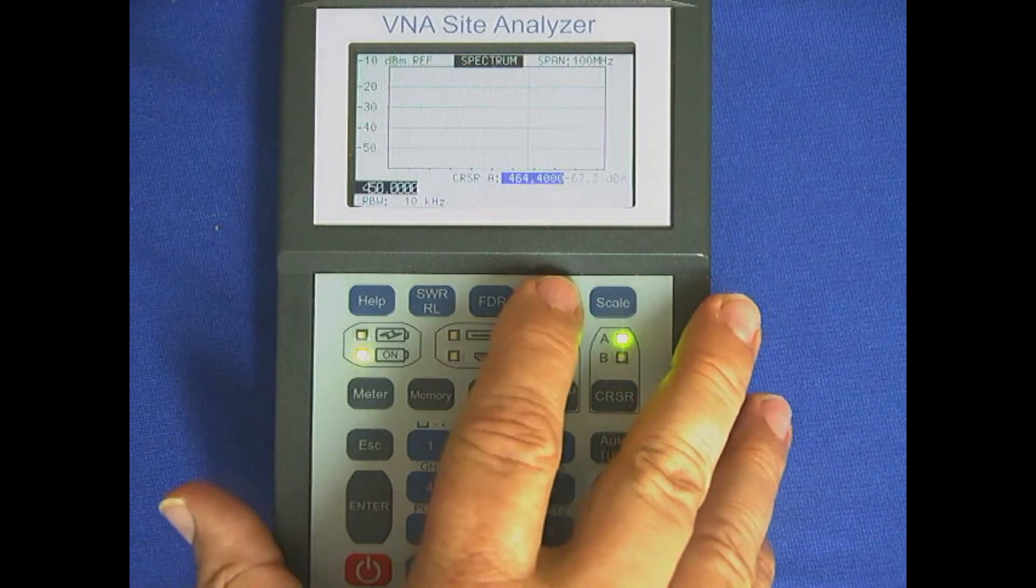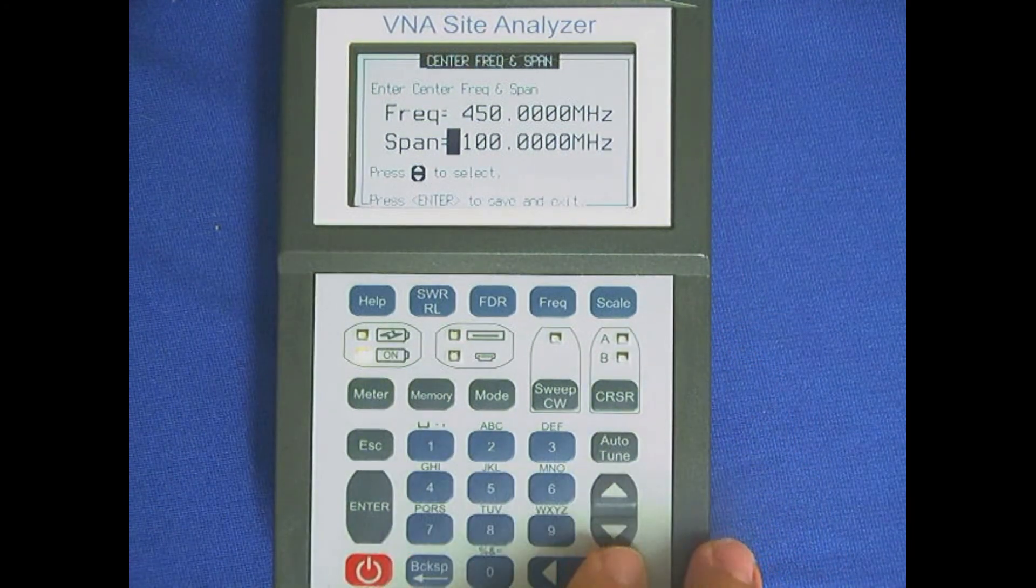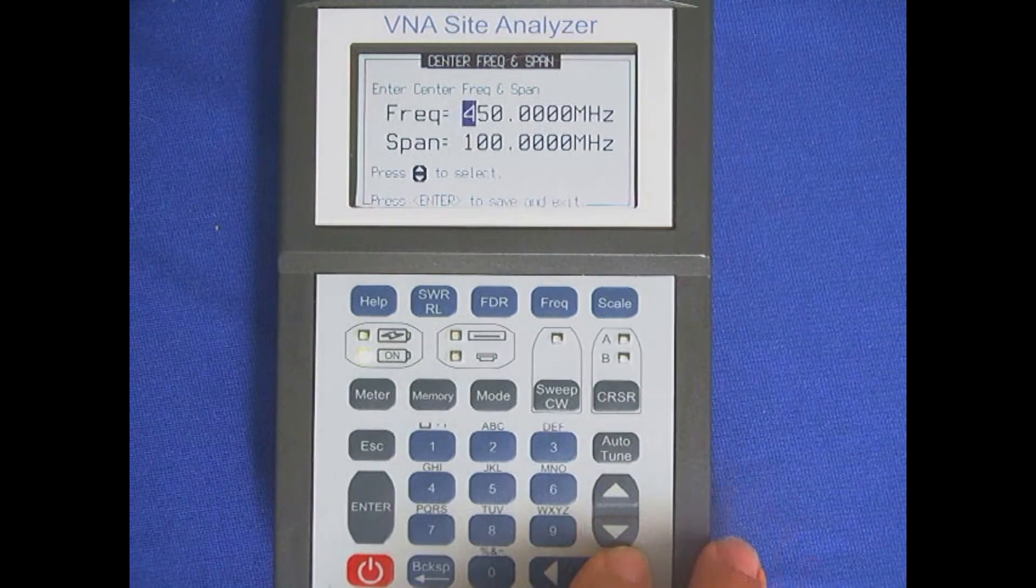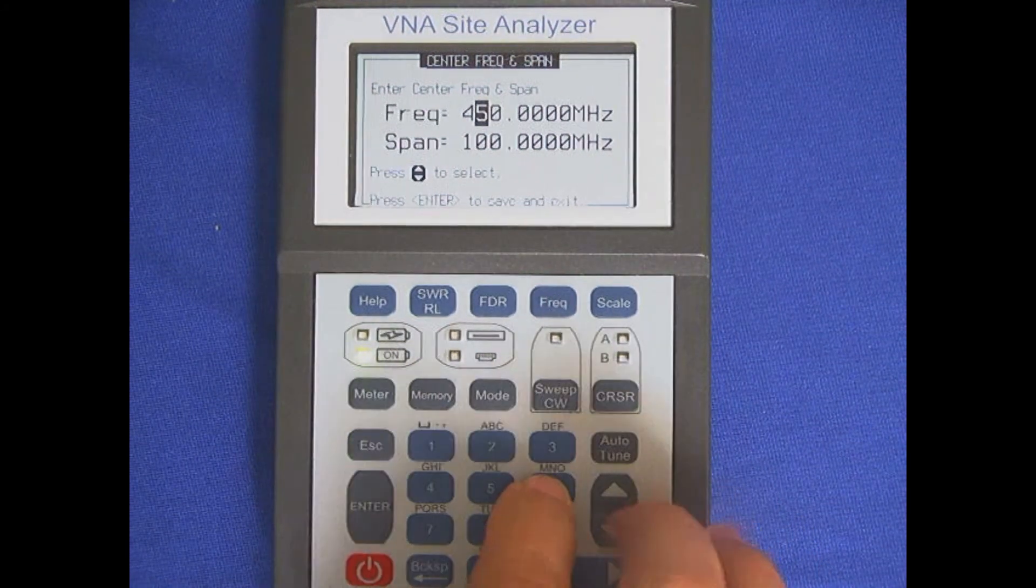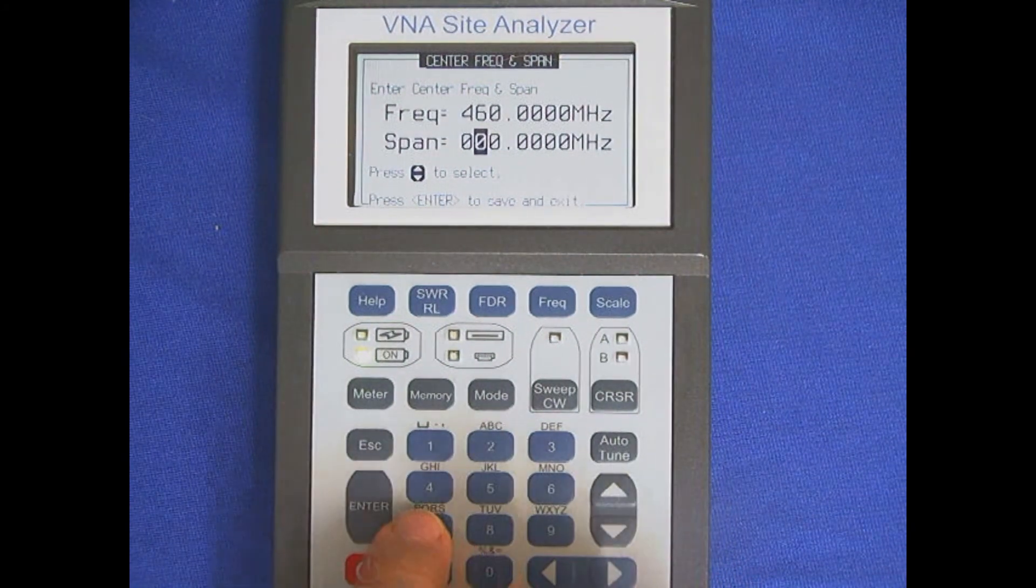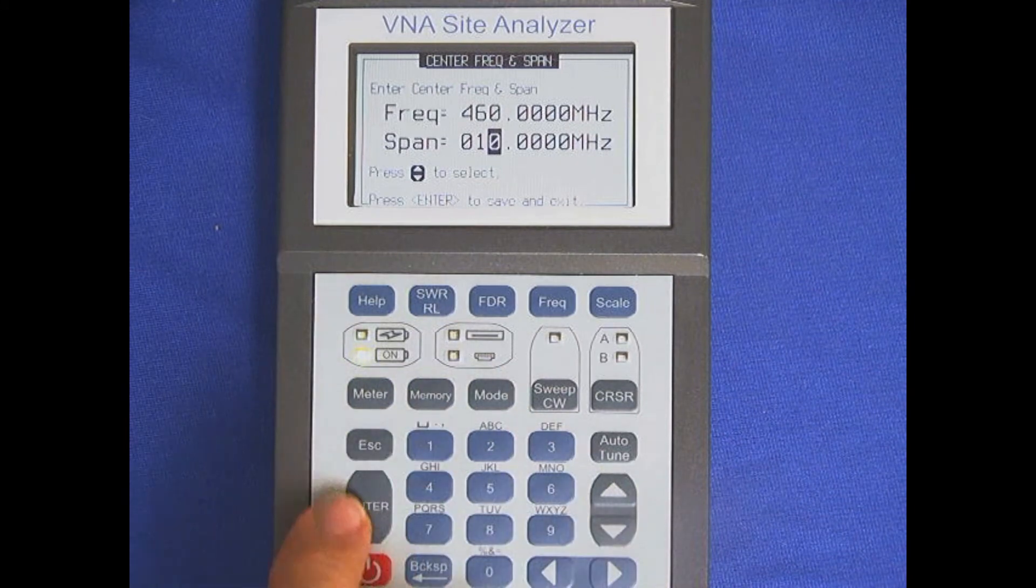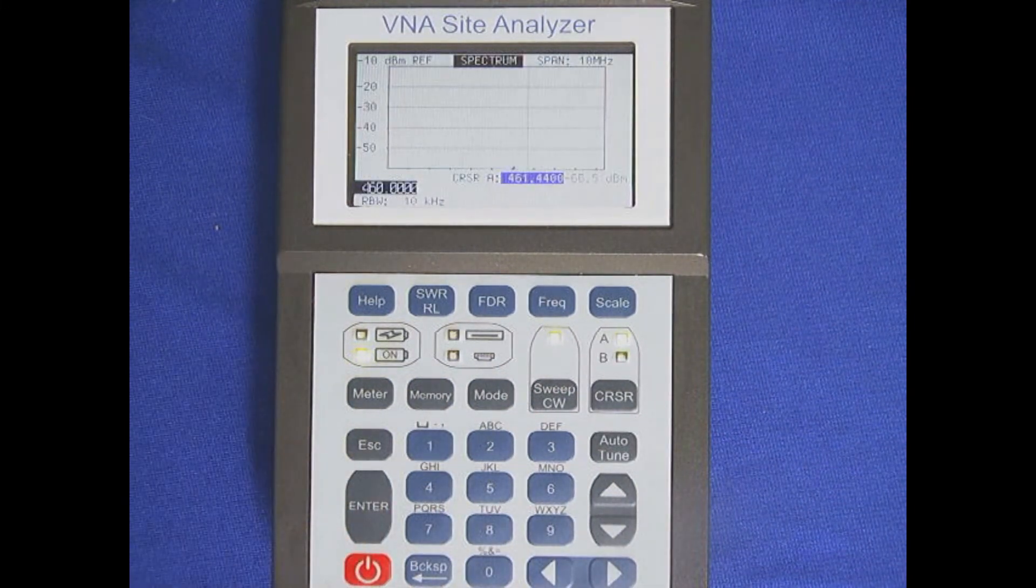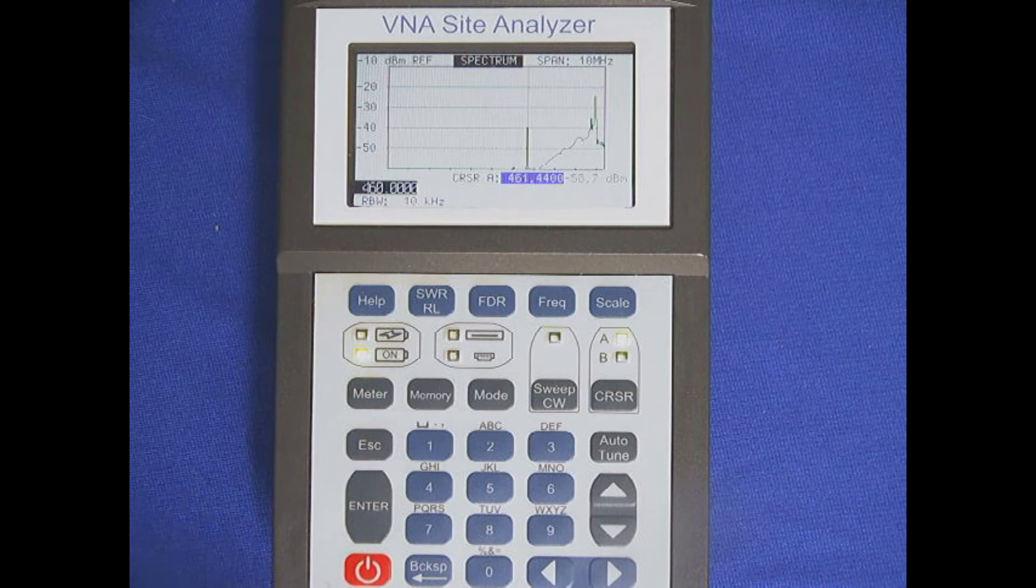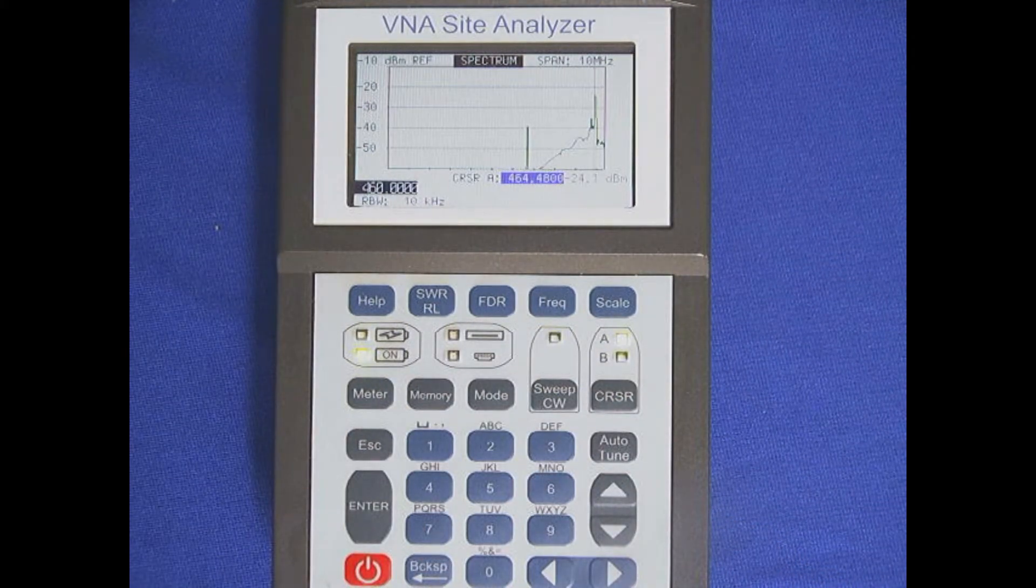So we can go back up here to frequency, change the span now. We know we're in the 460 range, so let's make that 460. And let's make the span 10 megs wide. And hit Enter. And we'll look for that transmitter again. Hit Auto-Tune now. And now we're getting a little closer. It says it's 464,800.